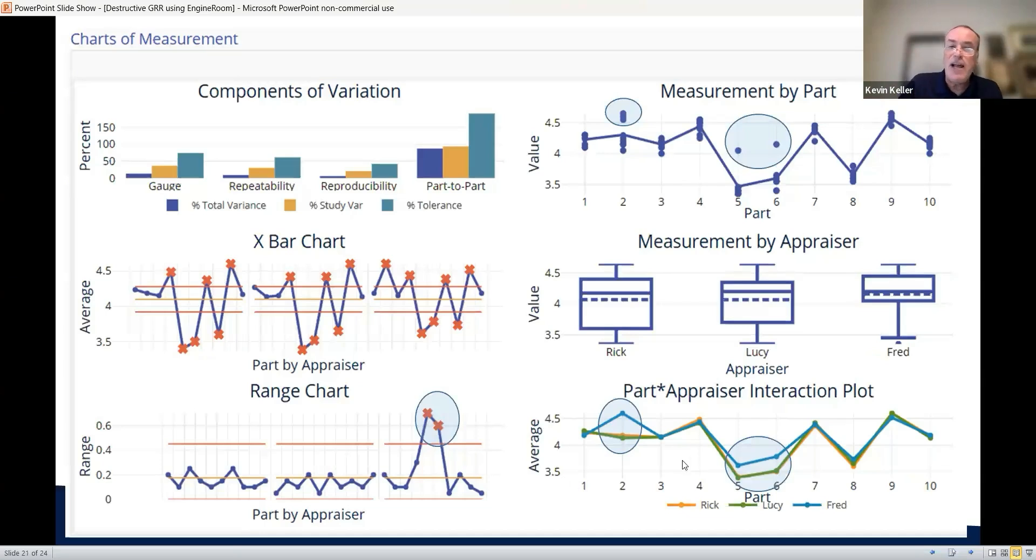And I have three operators, and what I'm drawn by is on seven of the 10 parts, they're really close. But on three parts, Fred appears to be different than Rick and Lucy.